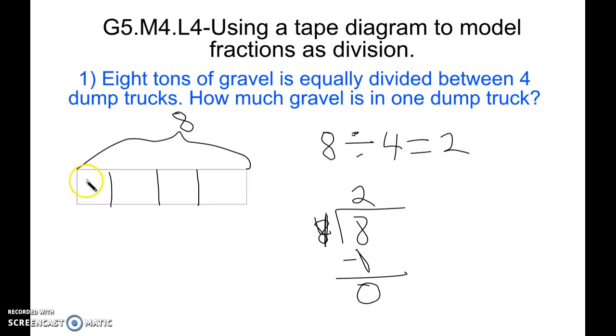So each truck will carry two tons of gravel. And to check our division we could take our divisor, four, multiply it by our quotient, two, and we get eight, which is what our dividend should be. And it is. So it matches.